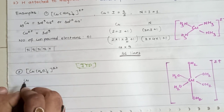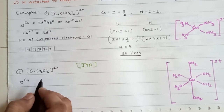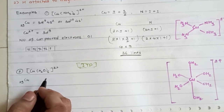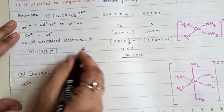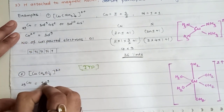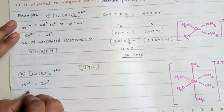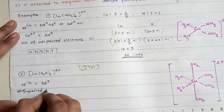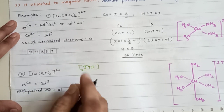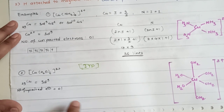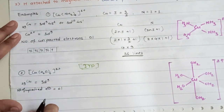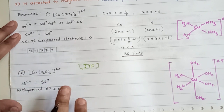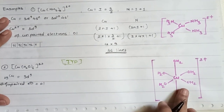For copper with atomic number 29, Cu²⁺ gives 3d⁹, so number of unpaired electrons is 1. Because of Jahn-Teller distortion, the geometry has two parts elongated in the structure. Because of this elongation, we observe the environment around the copper center.